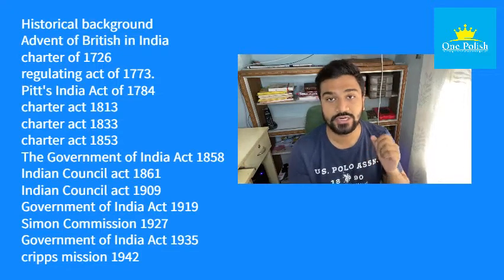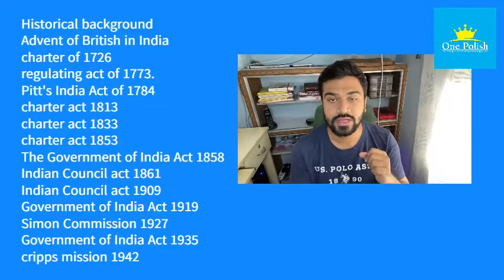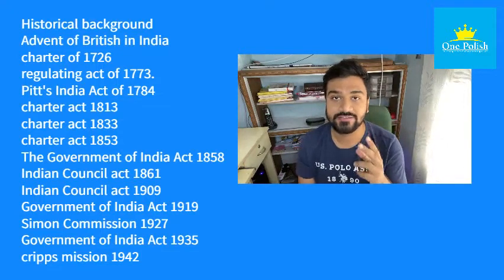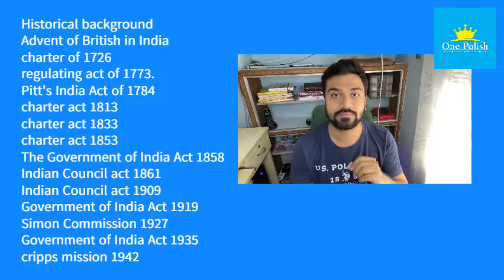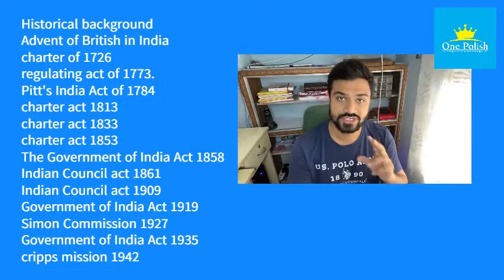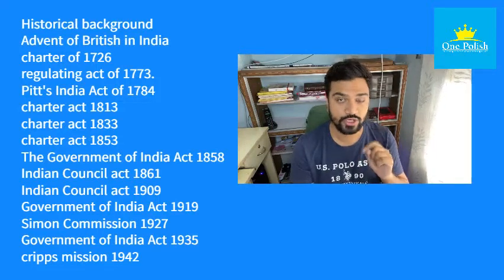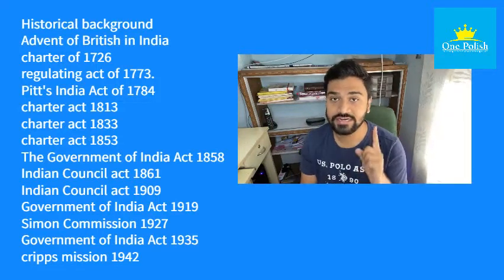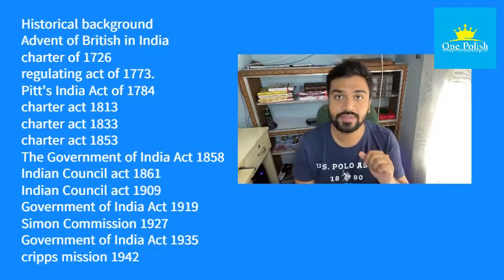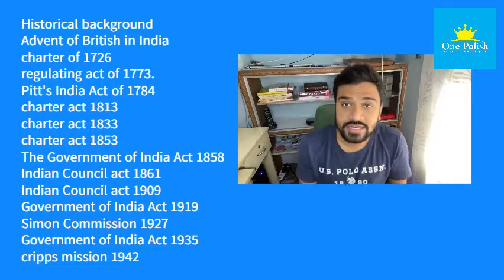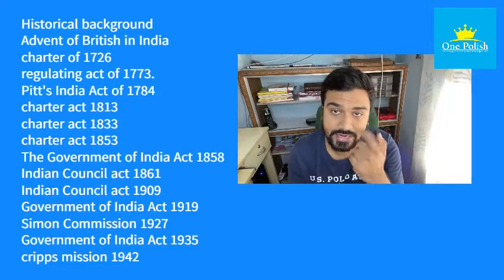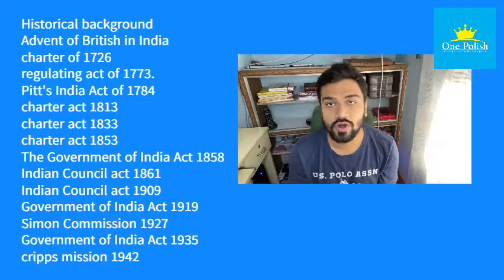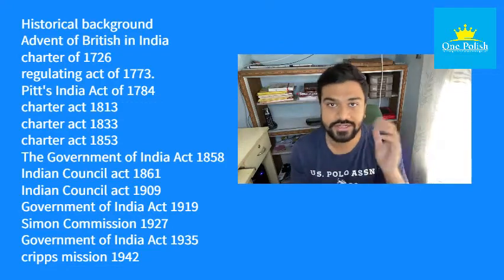The Government of India Act 1935 — this was a foundation. The Cripps Mission 1942. The Cabinet Mission Plan 1946. The Indian Independence Act — finally, in 1947.